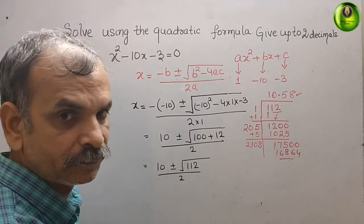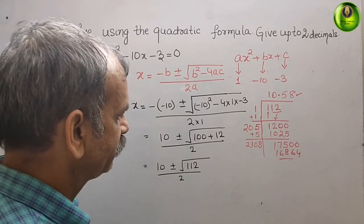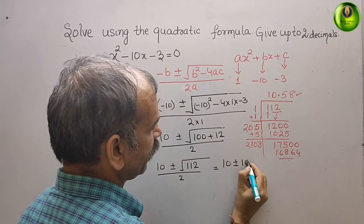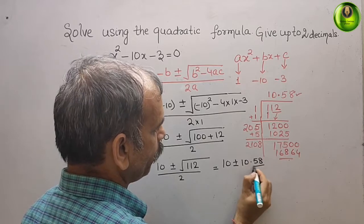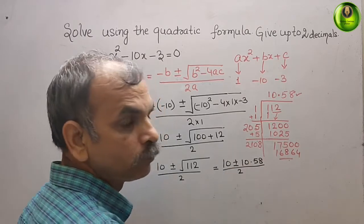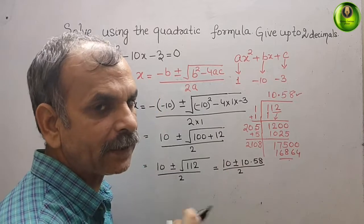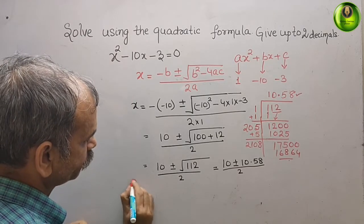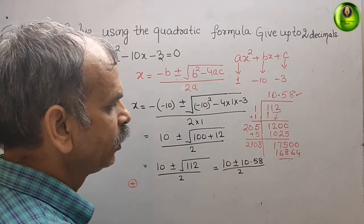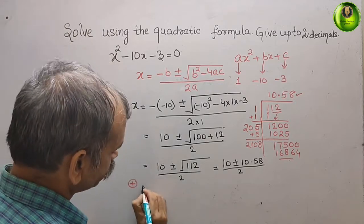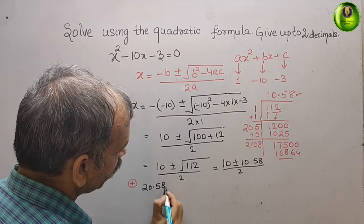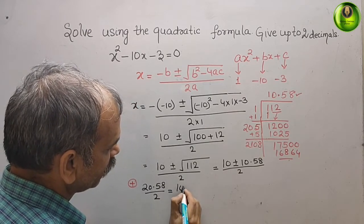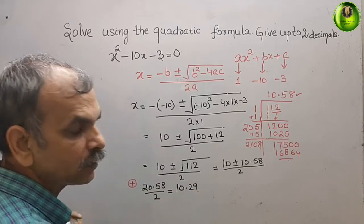So now we will write here: we get 10 ± 10.58 / 2. One time we take plus, another time we take minus. First we take plus. The plus value is: just add it, 20.58 / 2 = 10.29. This is the first value.